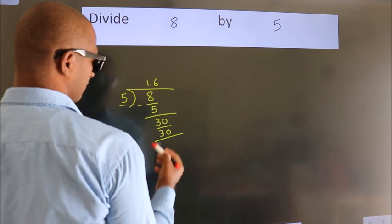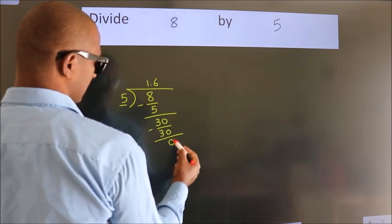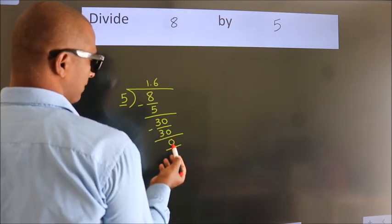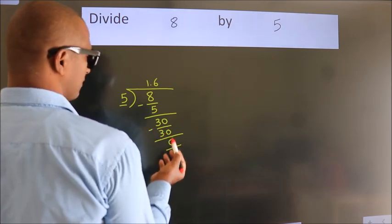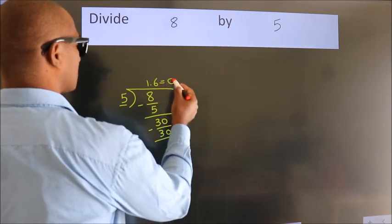Now we subtract, we get 0. We got remainder 0. So this is our quotient.